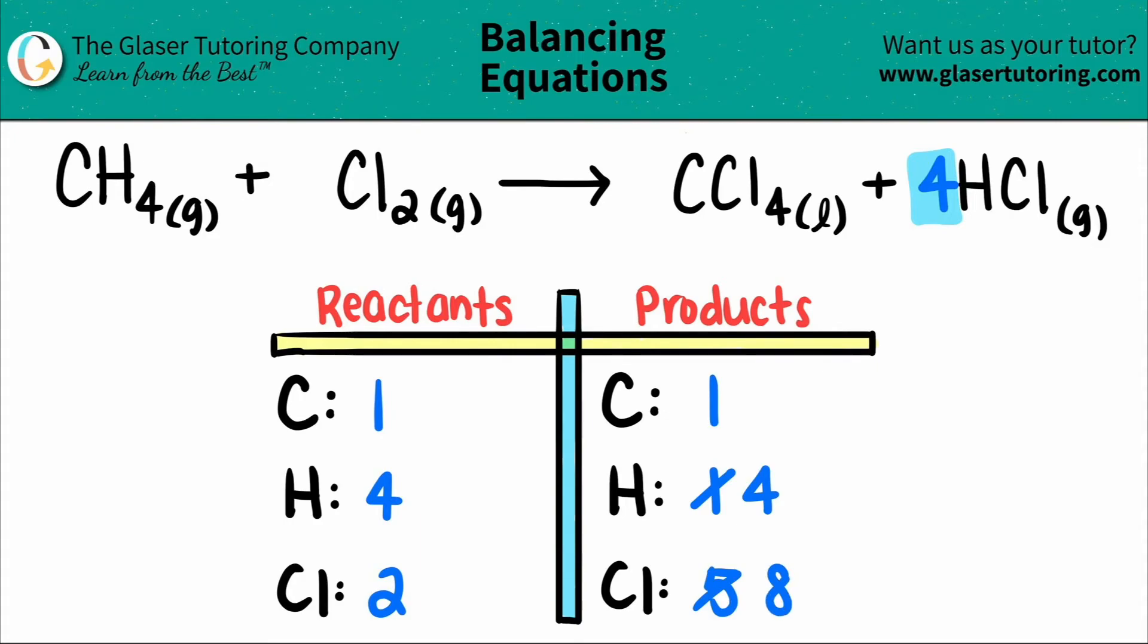The last thing I have to do is balance the chlorine. Two times what will get me to eight? Two times four. And whatever number I said, I put it in front of that element. So two times four will get me to eight. So I put a four in the coefficient. And now it's just the chlorine, so this will turn into an eight.